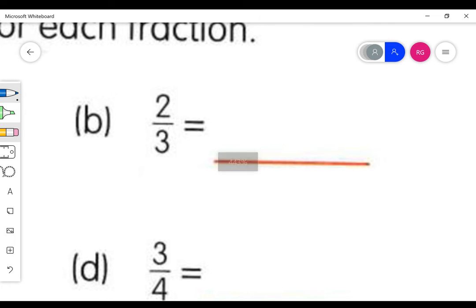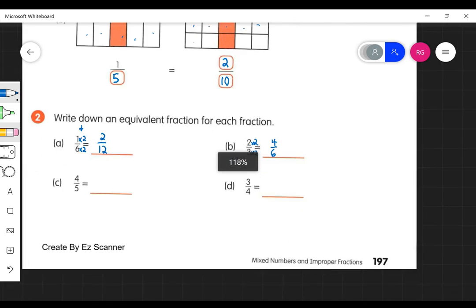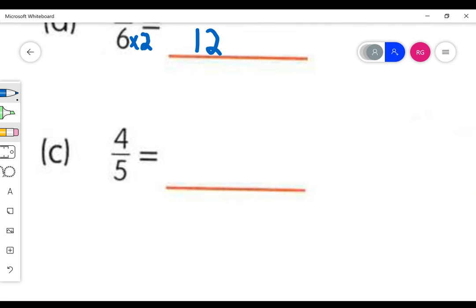And then B, we should say three times two and two times two. That's going to be four over six, or four sixths. And the next one, I'm just going to multiply this by three and this one by three as well, and I get twelve fifteenths.